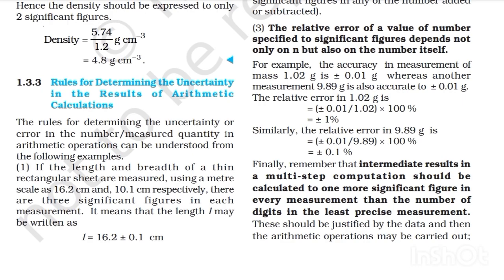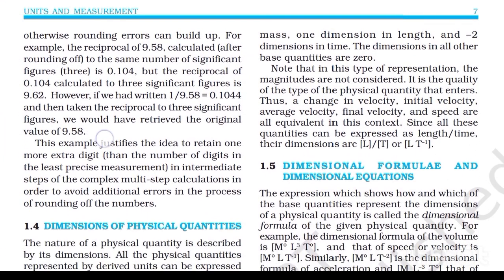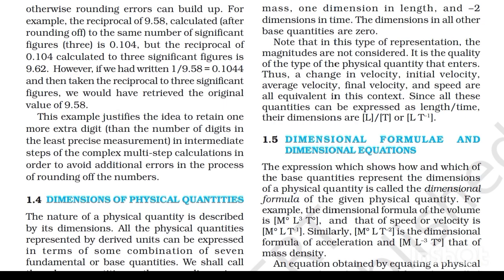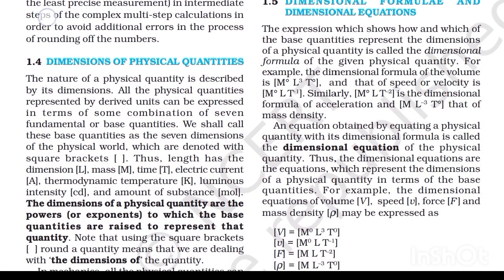In any multi-step computation, intermediate results should be calculated to one more significant figure than the number of digits in the least precise measurement, then rounded off at the end — otherwise rounding errors could build up. For example, the reciprocal of 9.58 rounded to three significant figures is 0.104, but the reciprocal of 0.104 to three significant figures is 9.62. However, if we compute 1/9.58 = 0.1044 and then take the reciprocal to three significant figures, we retrieve 9.58. This justifies retaining one extra digit in intermediate steps of complex calculations.